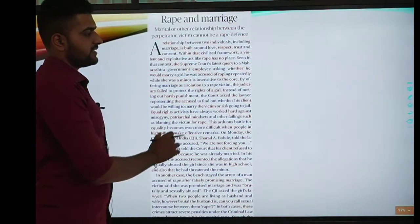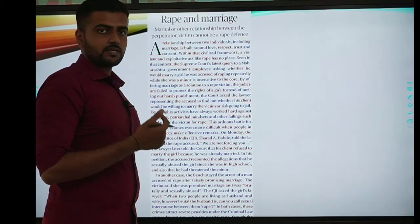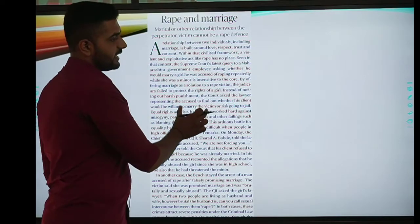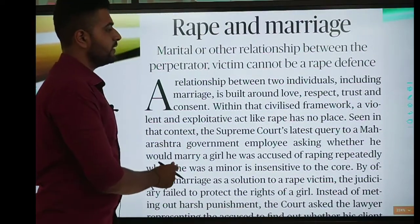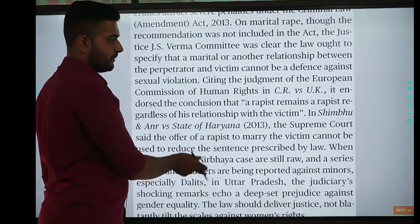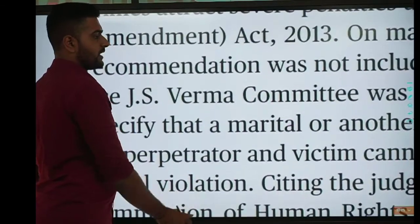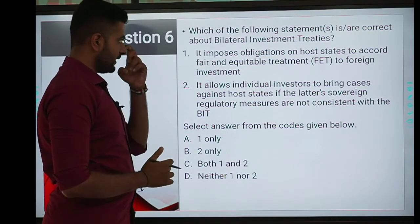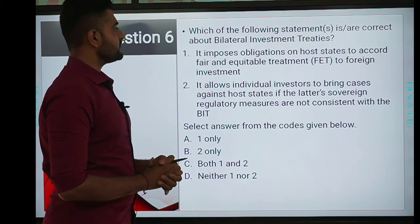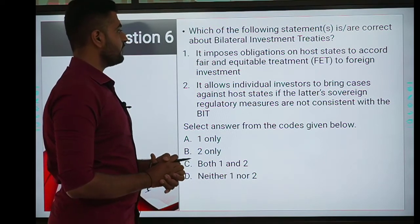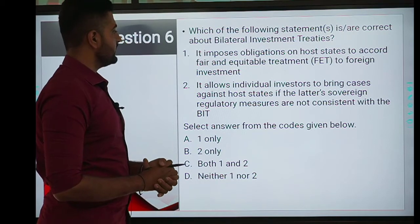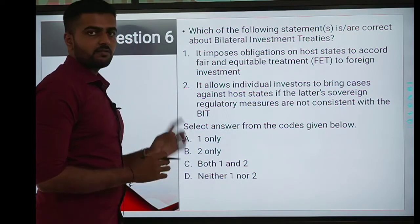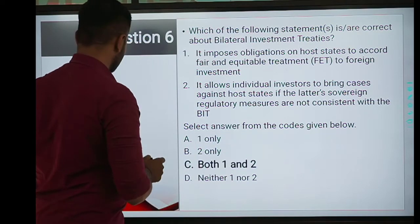Sixth question: which of the following recommendations is or are correct about bilateral investment treaties? First, it imposes legal obligations on host states to accord fair and equitable treatment to foreign investment. Second, it allows individual investors to bring cases against host states if the latter's sovereign regulatory measures are not consistent with the BIT — bilateral investment treaty. The correct answer is C, both 1 and 2.